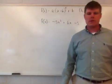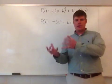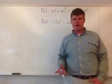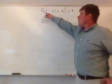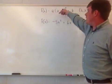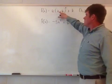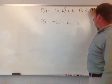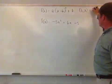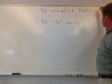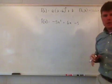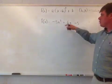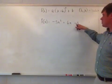We're going to talk about taking something in standard form and putting it in vertex form for a quadratic function. So I've got f(x) equals a times the quantity (x minus h) squared plus k, where h and k represent the vertex of my function. The problem we now have is f(x) equals negative 5x squared plus 6x minus 5.